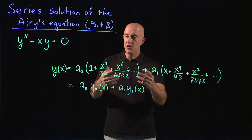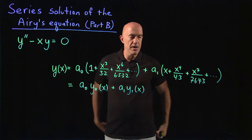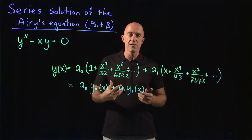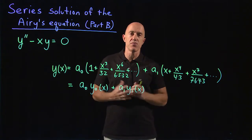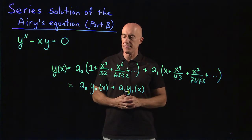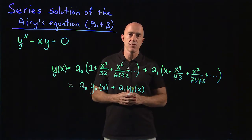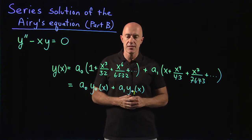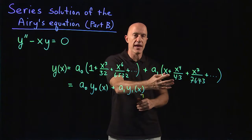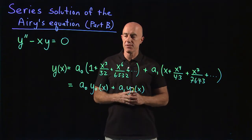That's all very nice, but when you want to see a function, what you really want to see is a graph of the function. So what does y naught of x look like when you plot it versus x? What does y1 of x look like when you plot it versus x?